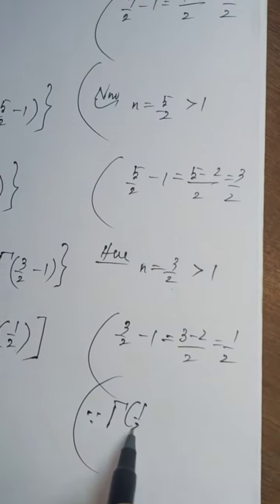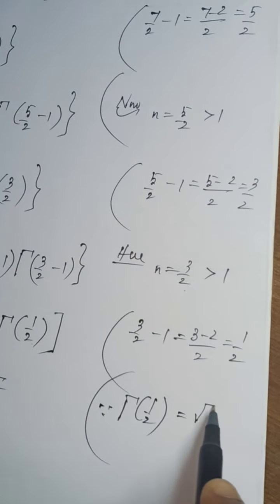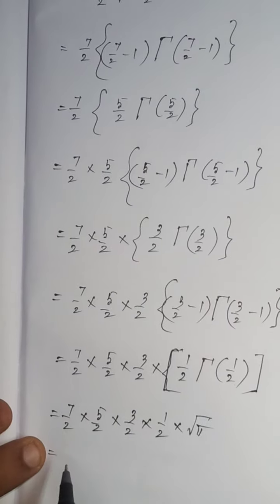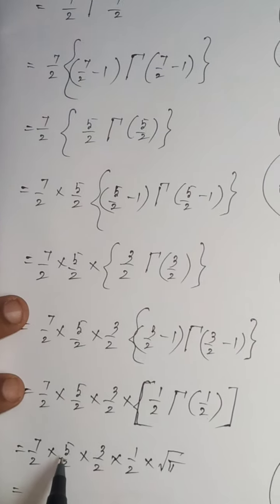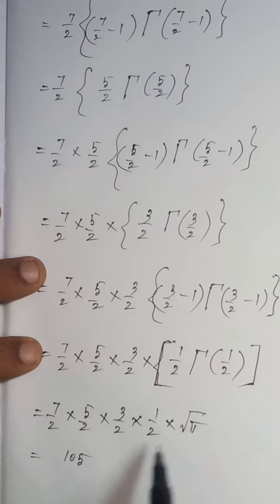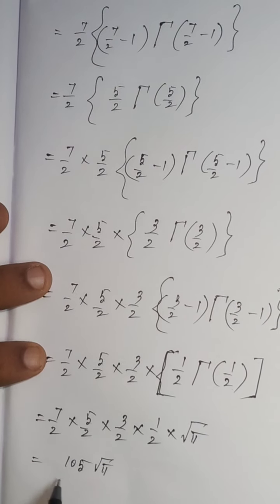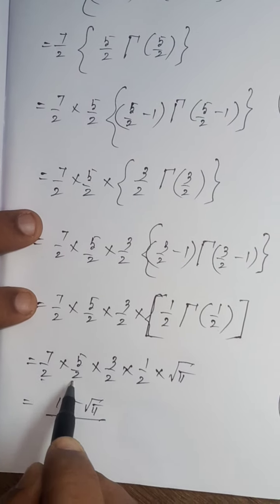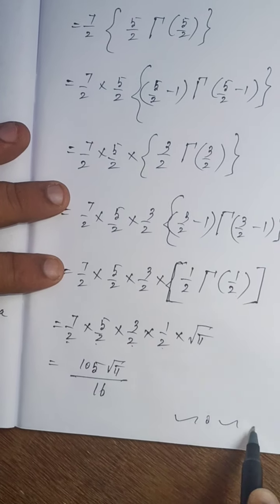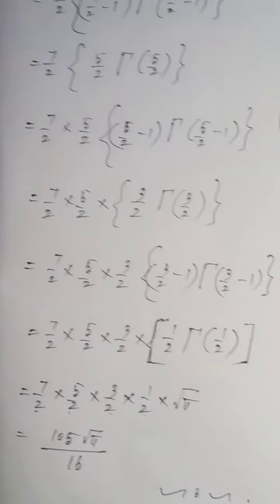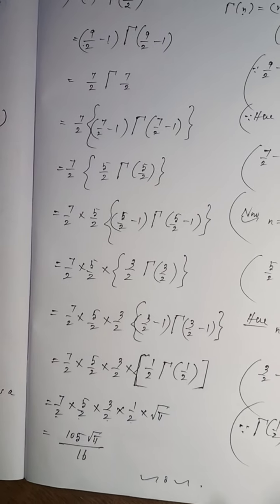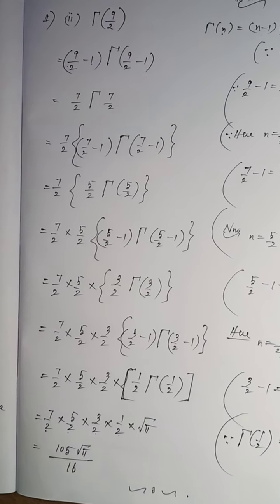Since Gamma of 1 by 2 equals root pi, simplify: 7 fives are 35, 35 threes are 105, into root pi, divided by 2 twos are 4, 4 twos are 8, 8 twos are 16. The answer is 105 root pi divided by 16. Problem 1, Subdivision 2 is complete. I will be teaching the third subdivision in the next video. Thank you, children.